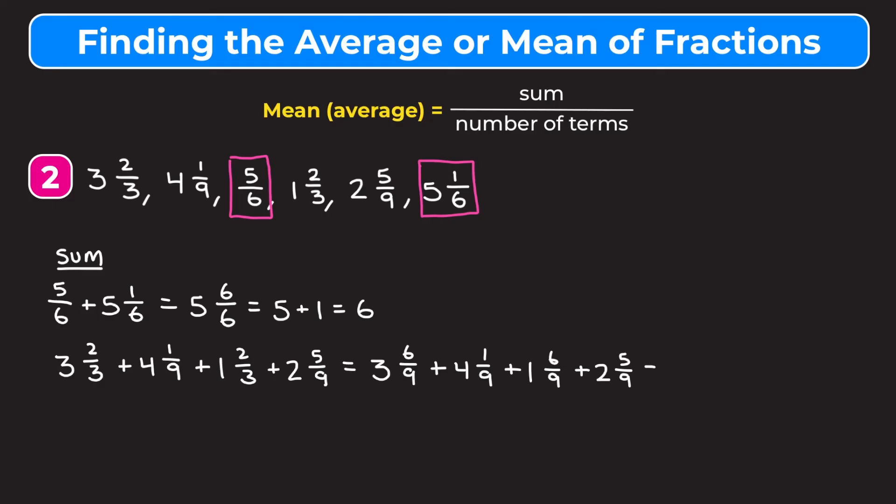And now what I'm going to do is add up all the whole number parts. So three plus four is seven, plus one is eight, plus two is 10. And I'm going to add all the fraction parts. So I'm going to add the numerators. Six plus one is seven, plus that six is 13, plus that five is 18.